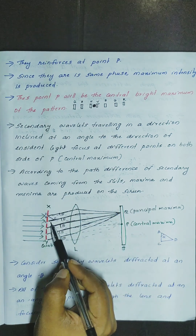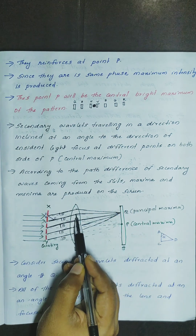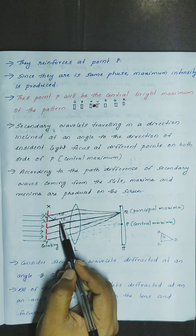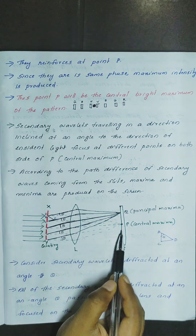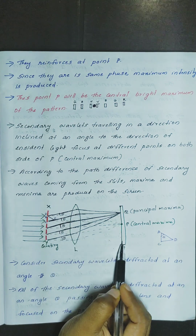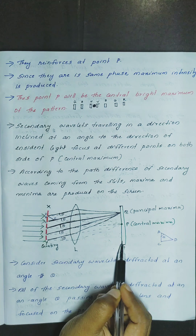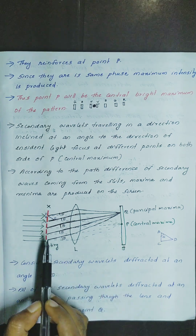If you have diffracted wavelets, the path difference will produce maxima and minima on the screen alternately. We will discuss this.